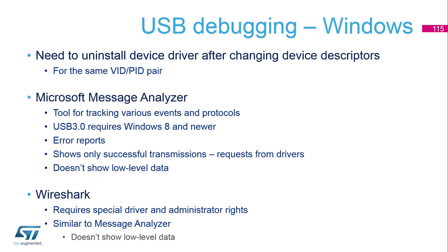There are also software options for USB debugging like Microsoft Message Analyzer or Wireshark. But as software tools go through the PC's USB hardware and drivers, timing is either not available or not reliable. On top of that, some messages are not propagated — for example, incomplete or corrupted messages may be missing — and this may be crucial to catch during development. If you are developing USB host functionality, a software analyzer on the PC cannot be used and a hardware one is the only option.